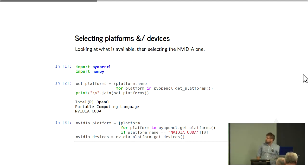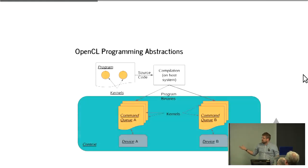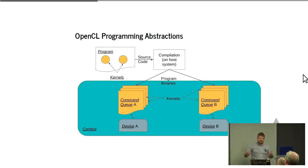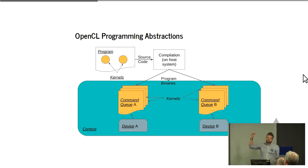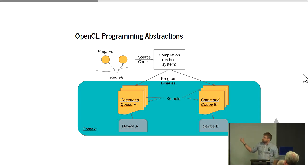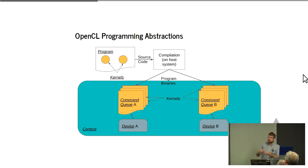To talk about the programming abstractions that OpenCL introduces: you have a program with special functions called kernels, you do a compilation process, and that produces binaries. Those binaries are bound to a particular context tied to a platform — a particular vendor's implementation. Within that context, there are devices which have a corresponding command queue associated with them, and that command queue can be used to invoke the kernels you've compiled. The most important thing to know is that you have special functions called kernels.